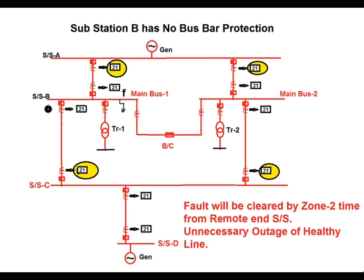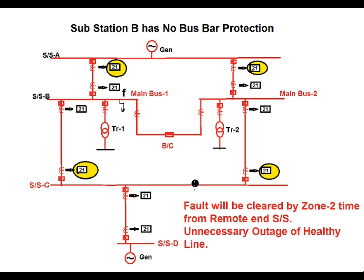In this figure, substation B has two main buses — main bus 1 and main bus 2 — connected via a bus coupler breaker. Substation B is connected to substation A via one double circuit line, where one circuit is connected to main bus 1 and another circuit is connected to main bus 2. Substation B and substation C are also connected via one double circuit line, similarly split across main bus 1 and main bus 2. Substation C to substation D has one single circuit line, and substation D and substation A are each connected by a source.